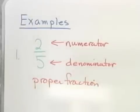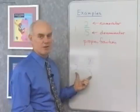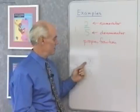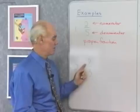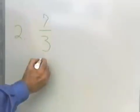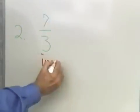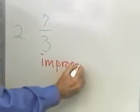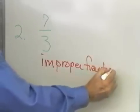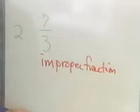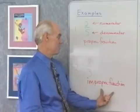Next I have problem number 2: the fraction 7/3. The numerator 7 is larger than the denominator 3, so this is an example of an improper fraction. That doesn't mean that there's something wrong with it — it's just called an improper fraction.